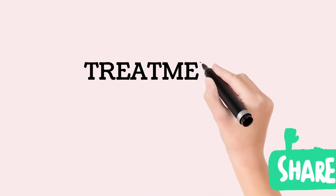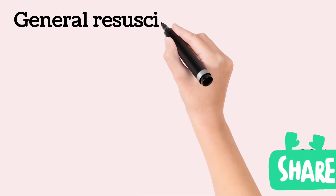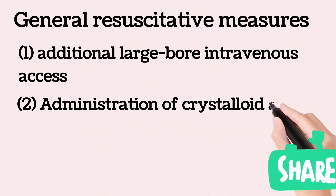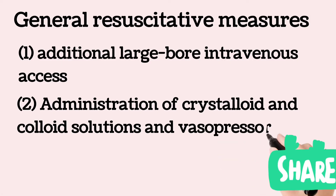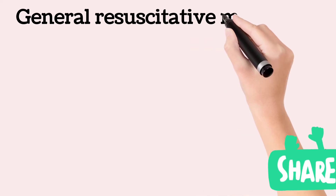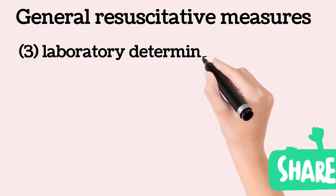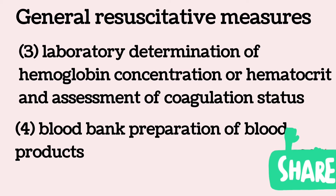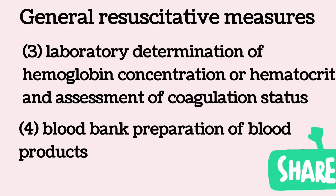Despite preventive measures, postpartum uterine atony may occur. General resuscitative measures include additional large-bore intravenous access, intravenous administration of crystalloid and colloid solutions and vasopressors, laboratory determination of hemoglobin concentration or hematocrit, assessment of coagulation status, and blood bank preparation of blood products for transfusion.